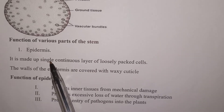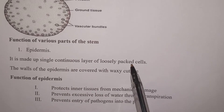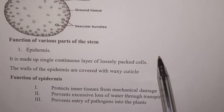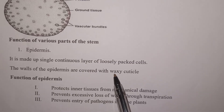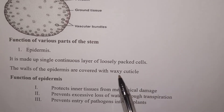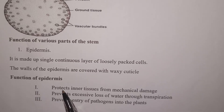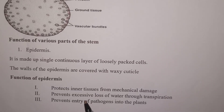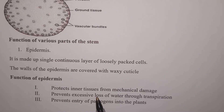Now the functions of various parts of the stem. Number one, the epidermis: it is made up of a single continuous layer of loosely packed cells, for exchange of gases and transpiration. The walls of the epidermis are covered with a waxy cuticle to prevent excessive loss of water. Functions of the epidermis: number one, protection — it protects inner tissues from mechanical damage; number two, it prevents excessive loss of water through transpiration, common in xerophytes — plants that grow in desert and semi-desert areas; number three, it prevents entry of pathogens, which are disease-causing microorganisms.